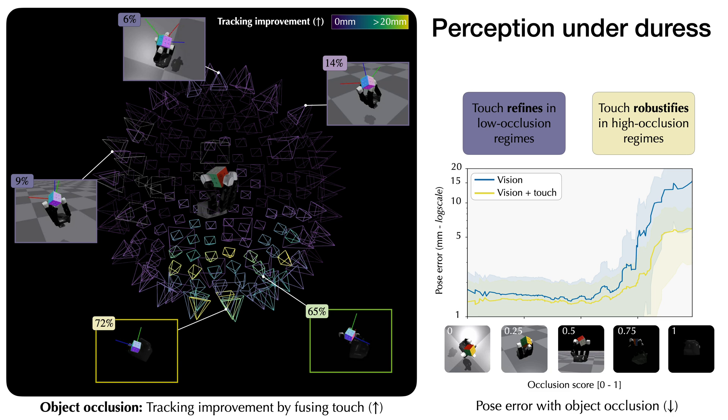This drives home the point that touch, at the very least, refines, and at the very best, disambiguates visual estimates during in-hand manipulation.